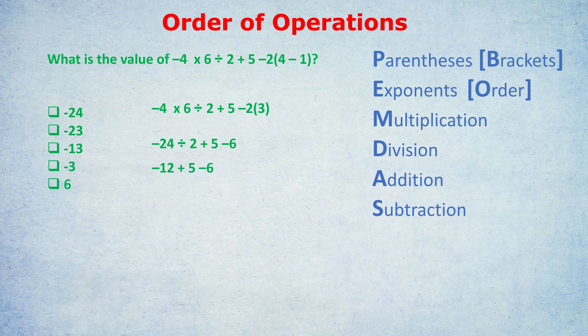After the multiplications, we do division: negative 24 divided by 2 is negative 12. Now there's an important mistake to avoid: some people see 12 and 5 and add them to get 17, then apply a negative. That's wrong — we have negative 12, not positive 12. Negative 12 plus 5 is negative 7. Then subtract 6: negative 7 minus 6 is negative 13. The answer is C.